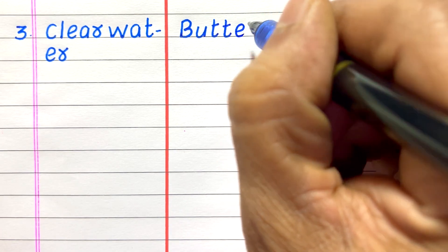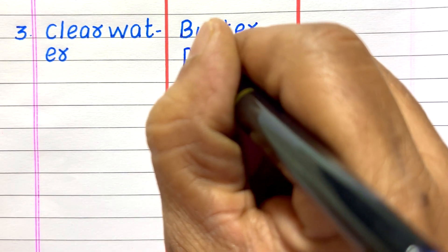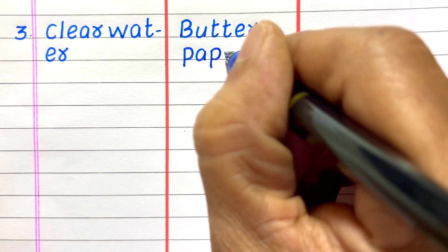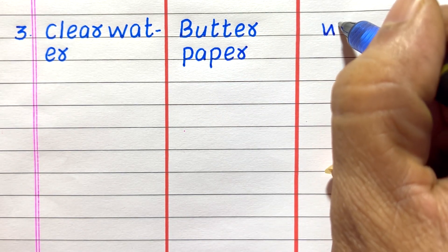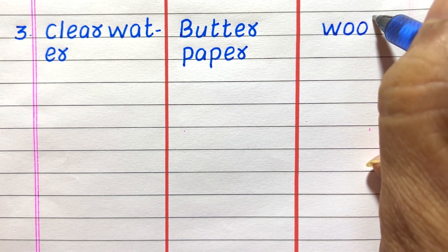Third example of a transparent object is clear water, translucent butter paper, opaque wool.